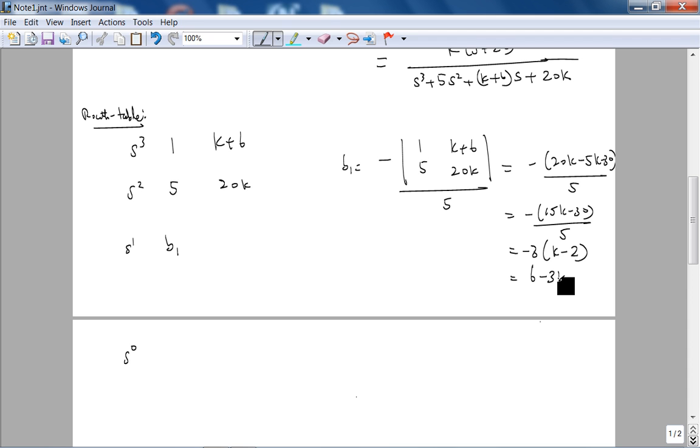Hopefully I didn't make an arithmetic error. Minus 5k, minus 30, so that's 15k, minus 30, so you factor out a 15. Yeah, so this looks good, so this is 6 minus 3k, right there, and this is B1.